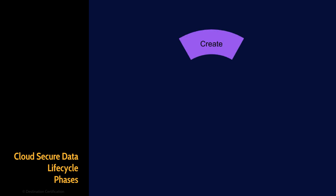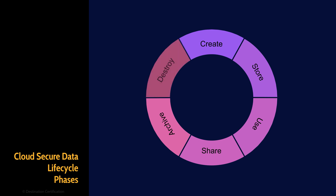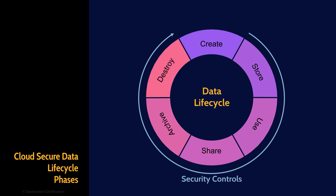Here's a nice visual summary of the cloud data lifecycle, and one more critical requirement: data must be properly classified when it's created. Classification defines how valuable data is to an organization and what controls are cost-justified. The classification will derive the requirements for all subsequent phases — including the storage phase, whether data needs to be encrypted, replicated, etc.